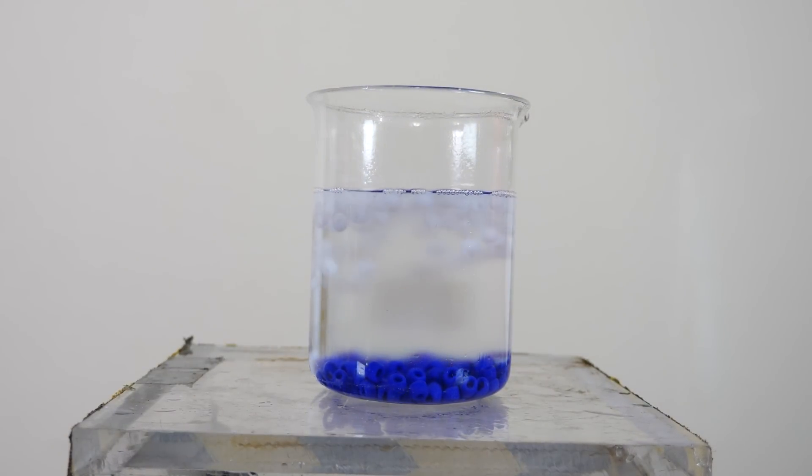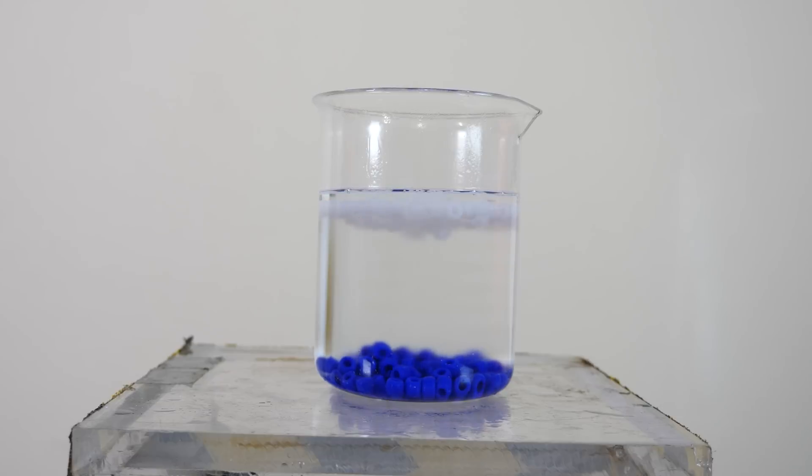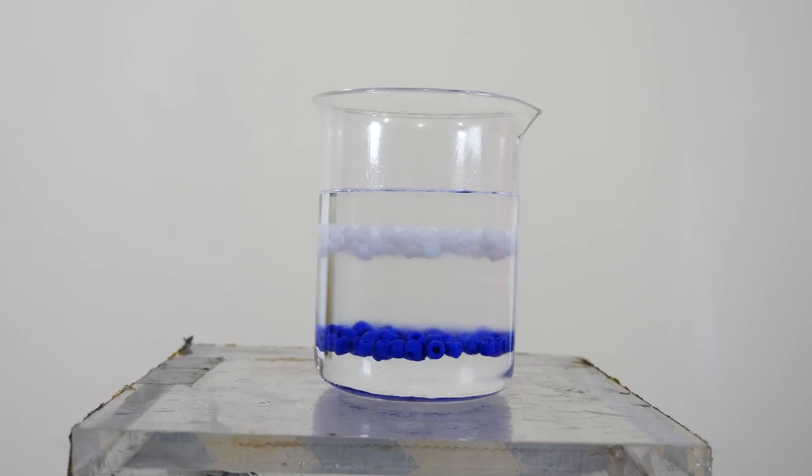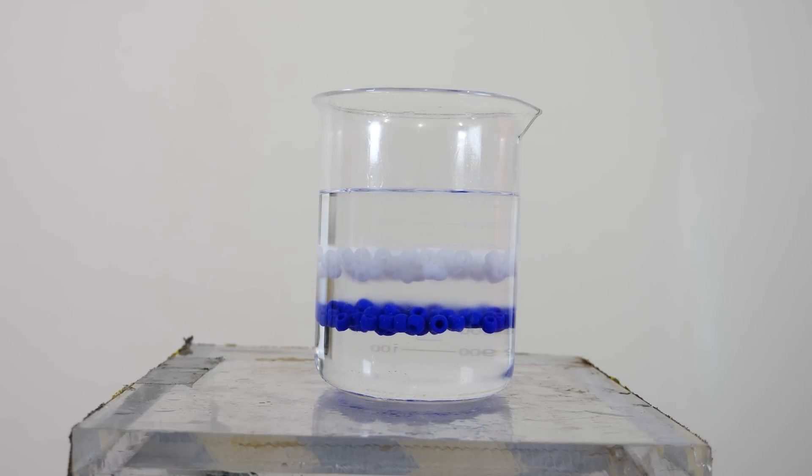The white beads float in alcohol, but the blue beads only float in water. So in the miscible solution, the blue ones sink and the white ones float. But once it starts to separate, the blue ones rise to the center and the white ones sink to the center.